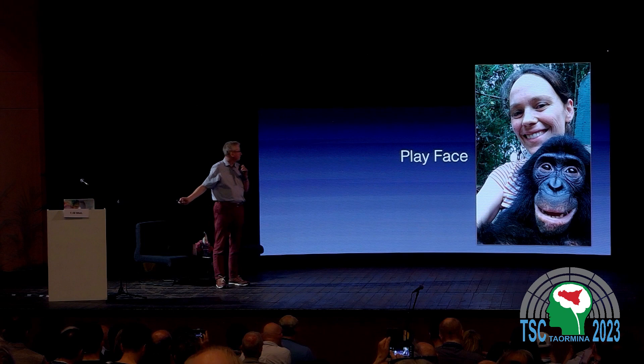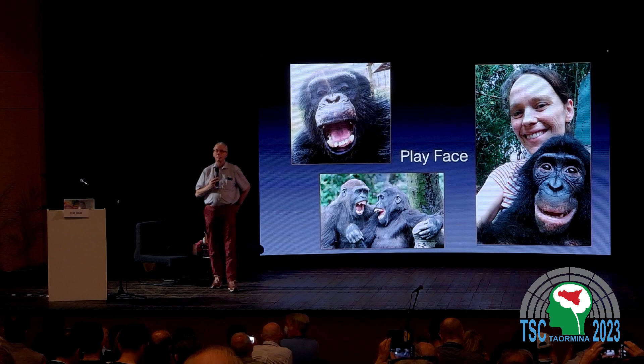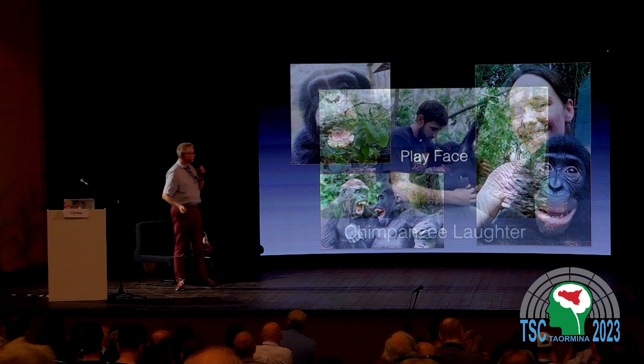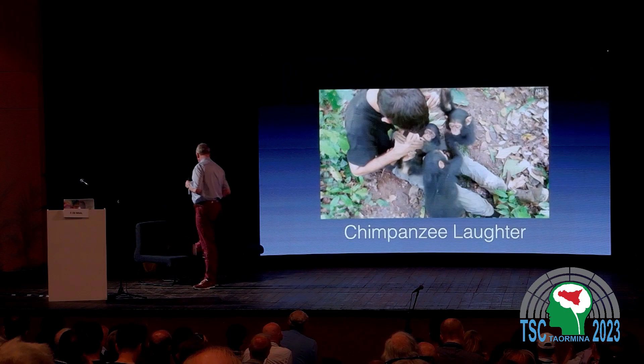A chimpanzee is capable of expressing the same range of emotions that we express, and I think they have the same range of emotions also. Here you have my co-workers playing with a bonobo, showing very similar facial expressions. Here are the laughing faces of chimpanzees and gorillas — you can find laughing behavior very easily. I'll show you a little video of this, and hopefully you can hear the sound of the laughing.